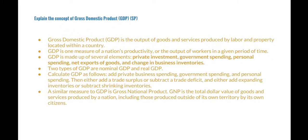To calculate GDP, you can add private business spending, government spending, and personal spending. Then, depending on whether you have a trade surplus or a trade deficit, you would either add the trade surplus or subtract the trade deficit, and either add expanding inventories or subtract shrinking inventories.